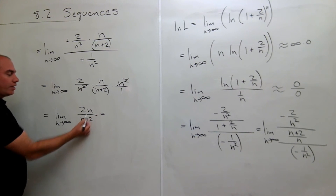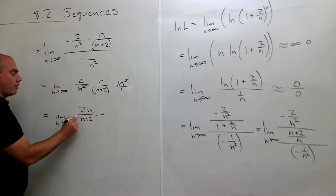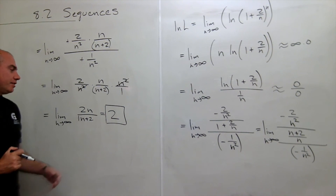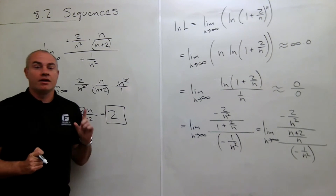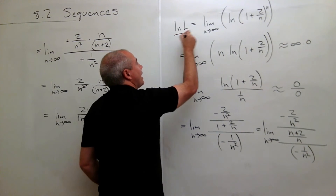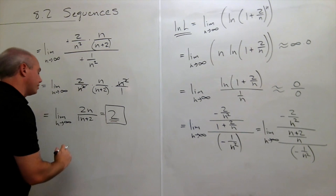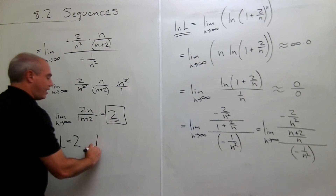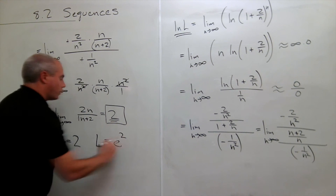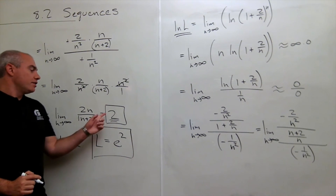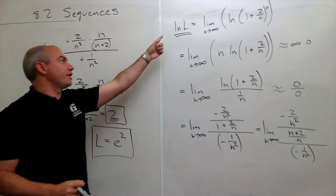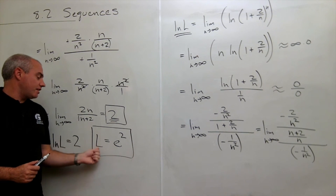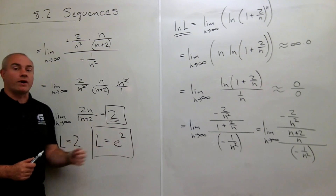Since the power of n on top and bottom is the same, I can just take the leading coefficients, which gives 2 over 1, or 2. So I get a limit of 2. But am I done? Not really — because I said that the natural log of L is equal to 2. So ln of L equals 2, which means L must be e squared. This is the limit I was actually looking for. The answer to the problem — what is the limit of that sequence — is L equals e squared.